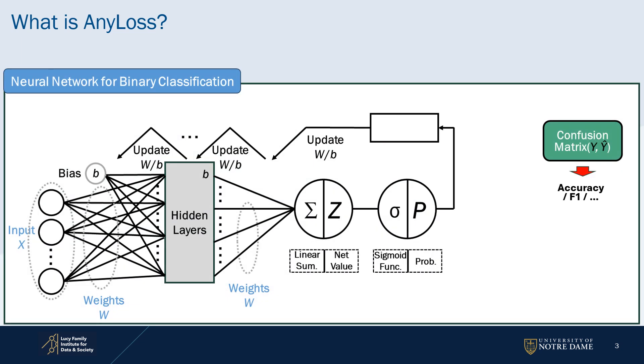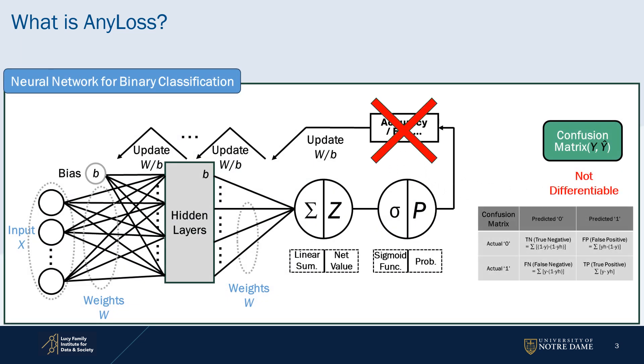However, they cannot be a goal of learning, which is a loss function in a neural network, because they are not differentiable.